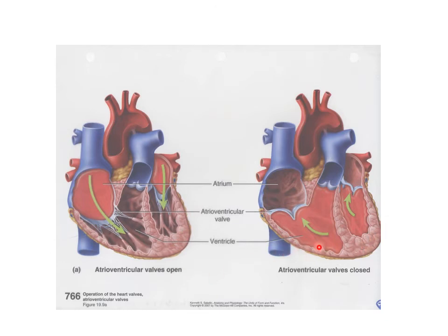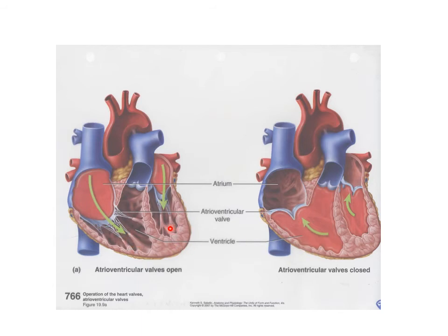When the ventricles contract, the valve flaps close off the atria so blood doesn't flow backwards, and blood is forced through the semilunar valves — one going into the pulmonary trunk and the other into the aorta. The atrioventricular valve flaps are held in place by tendinous cords anchored to papillary muscles so they don't blow back into the atria.